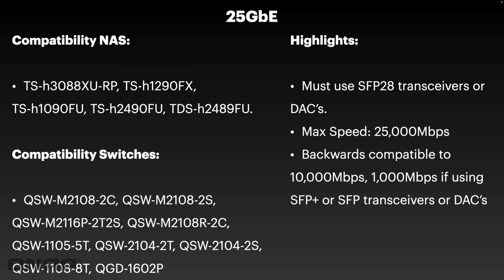Moving on to the next standard, which is 25 gig. We have a few units that come with 25 gig embedded, but this isn't the whole range that supports it — we also offer expansion cards at 25 gig that would go into a lot of our NAS. It's not that much more expensive for the 25 gig cards compared to 10 gig cards. The 25 gig cards work at 10 gig speeds as well, using SFP+ transceivers or DACs instead of the SFP28 standard, so they also work at 10 gig and even 1 gig if needed.